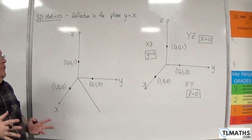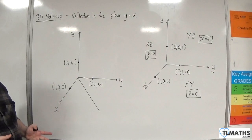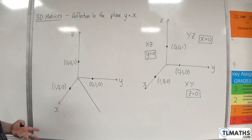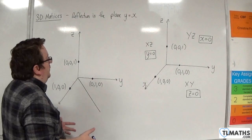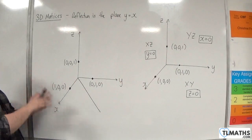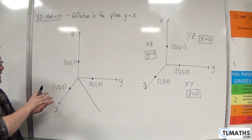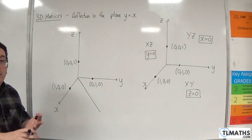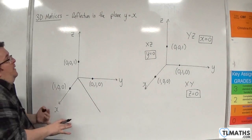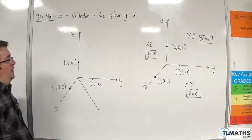y equals x is actually a plane in three dimensions because it's also governing the fact that z could be anything you like. z being anything you like will satisfy that equation.